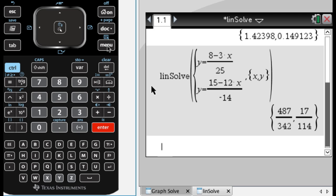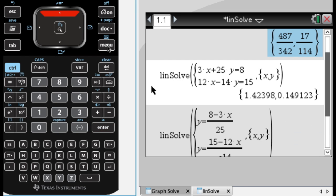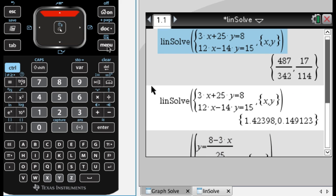So that's the second equation. So I'm going to solve this. And I get 487 over 342 and 17 over 114. Same answer. So it's actually a lot less work because you don't need to go through and solve for Y.